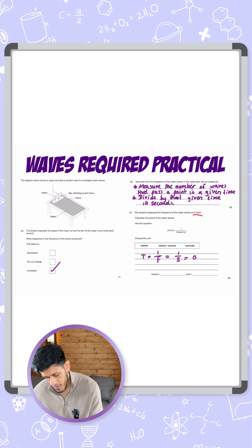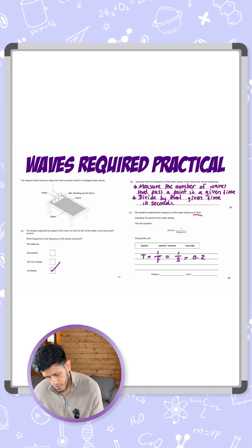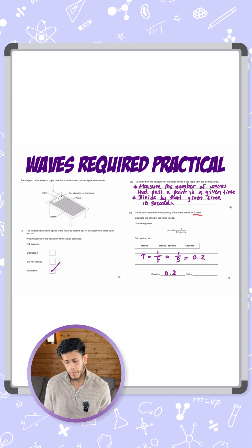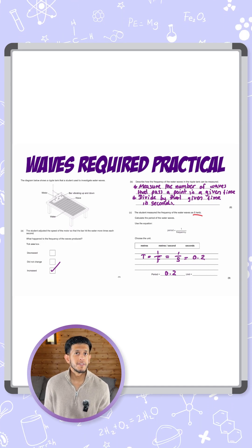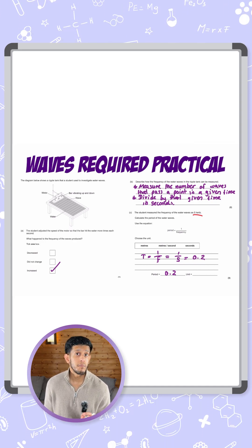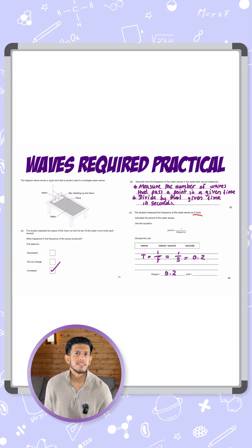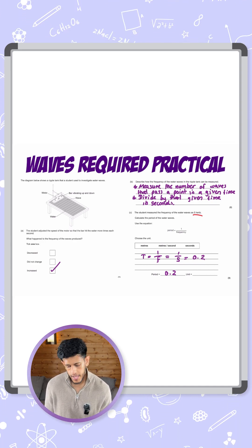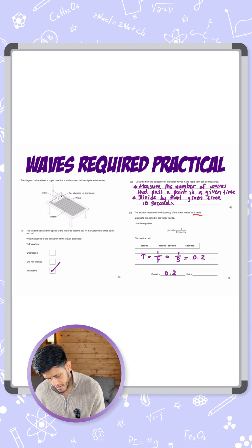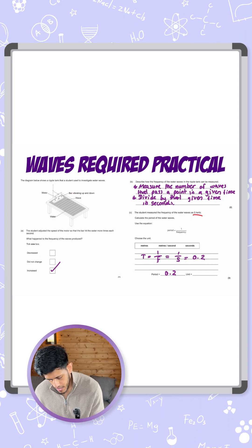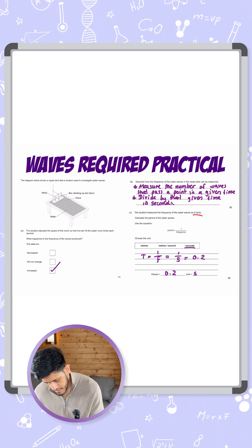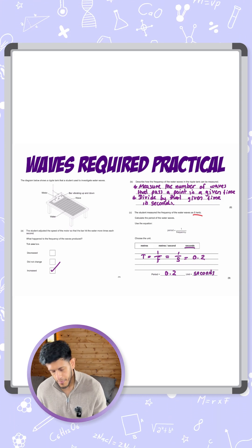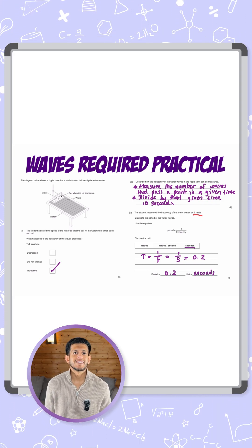That gives us an answer of 0.2. The period is 0.2, and because the period is a measure of the time for one complete oscillation — it's a measurement of time — the only correct unit is seconds. So the period is 0.2 seconds, for three marks.